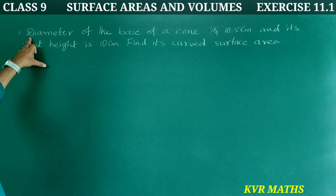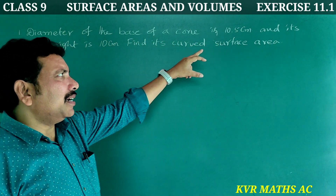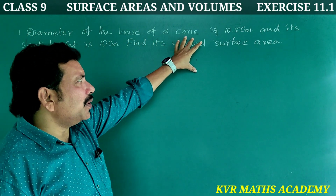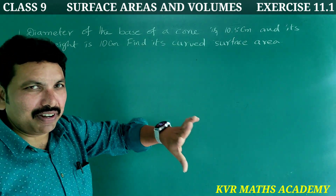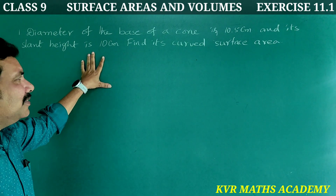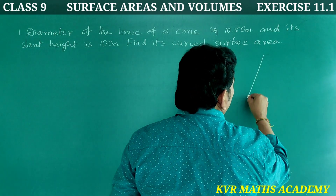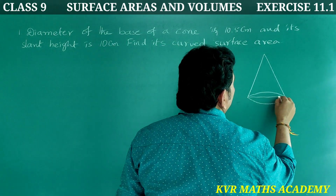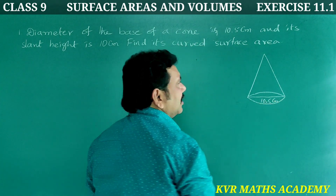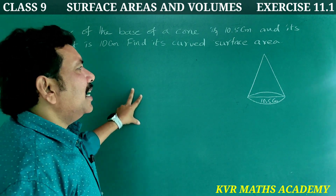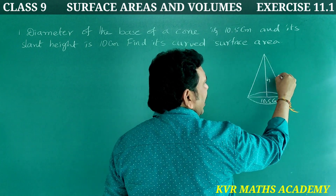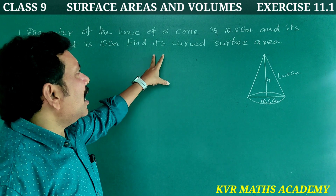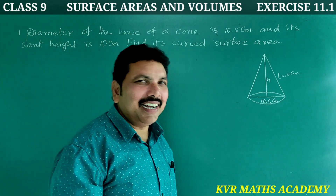First question: the diameter of the base of a cone is 10.5 centimeters and its slant height is 10 centimeters. Find its curved surface area. So, the base diameter of the cone is 10.5 centimeters, and the slant height l is 10 centimeters. We have to find the curved surface area of the given cone.